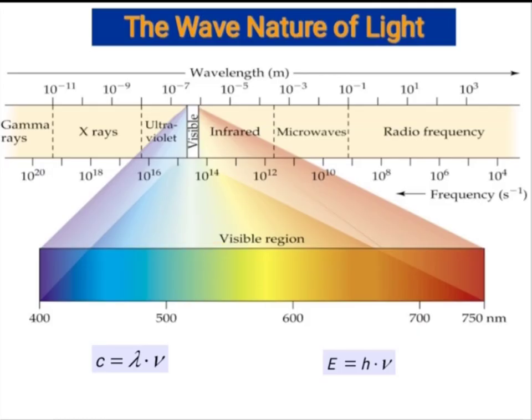The atomic spectra span several regions: gamma rays, X-rays, ultraviolet radiations, UV-visible radiations, infrared radiation, microwaves, and radio frequency radiations. The visible region spans approximately 400 to 800 nanometers. These are the various regions of the electromagnetic energy spectrum.